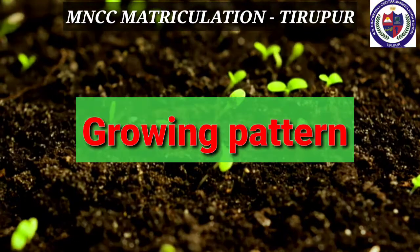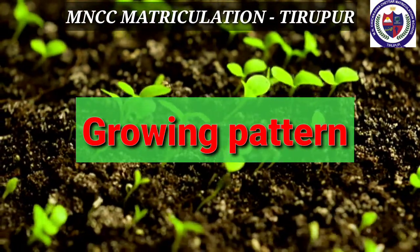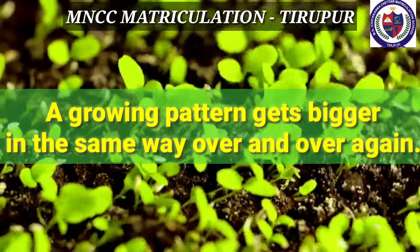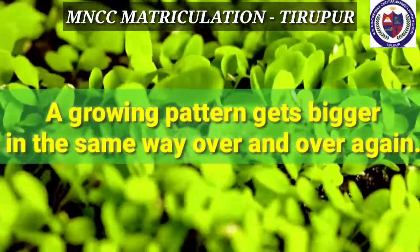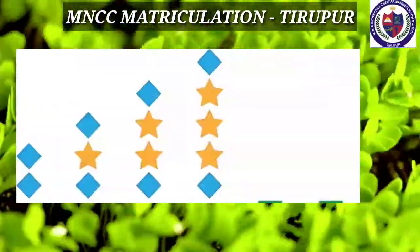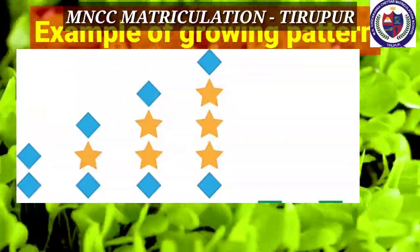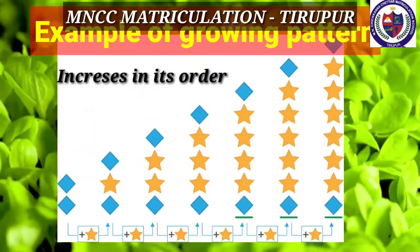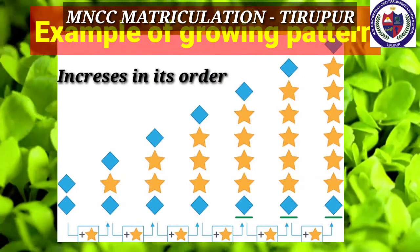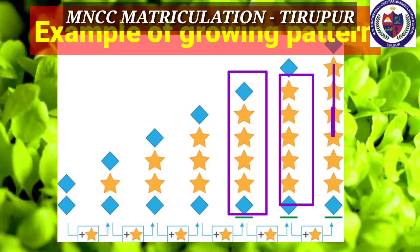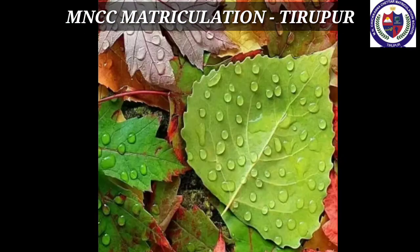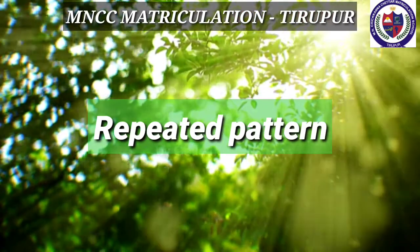There are two types of patterns. The first one is the growing pattern. A growing pattern gets bigger in the same way over and over again. See the given picture: the stars increase in each step. If you want to increase it more, you can continuously draw four stars in the fourth step, five stars in the fifth step, six stars in the sixth step. This is called a growing pattern.